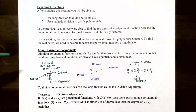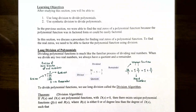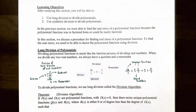Long division of polynomials. Dividing two polynomial functions is very similar to the process of dividing real numbers. Whenever you are dividing two real numbers you will always have what's called a quotient and a remainder. Let's review how to divide real numbers.